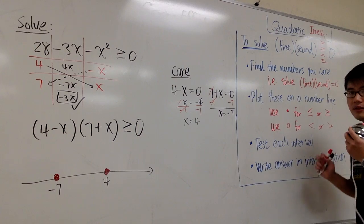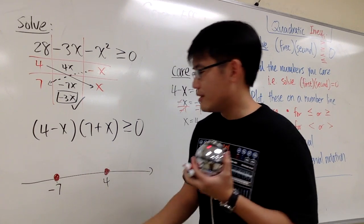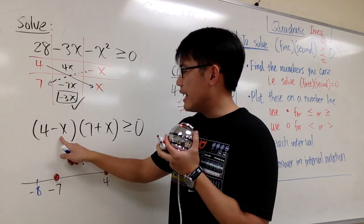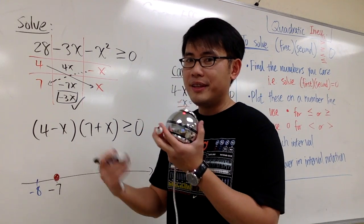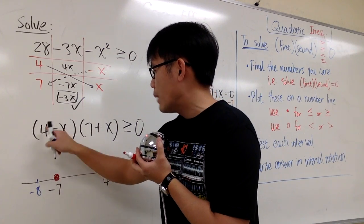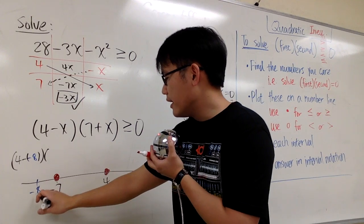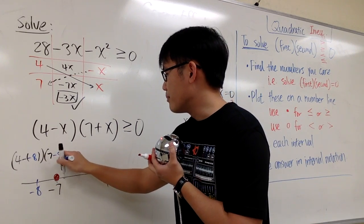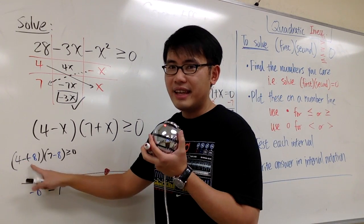And the rest is we are going to test each interval. We are going to select a number that's less than negative 7, like negative 8. This is the number I'm going to use. I'm going to use this number, plug into this x and this x to see if I end up with a true or false statement. If I plug in negative 8 into x, I will end up with 4 minus negative 8, and then I will multiply with 7 plus negative 8. Be super careful with the sign.